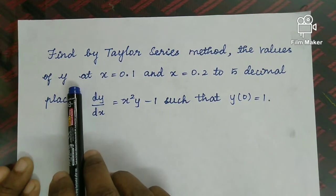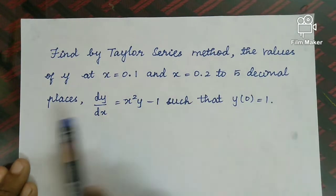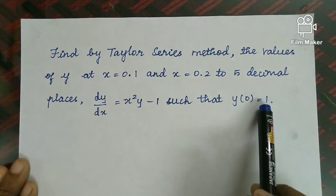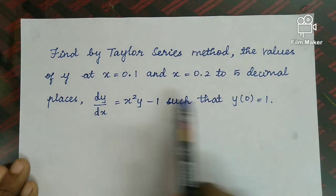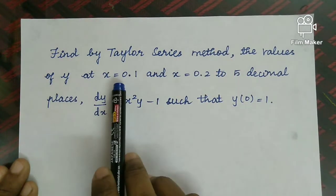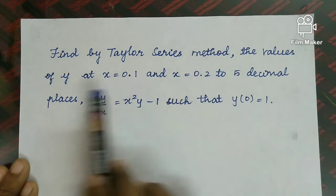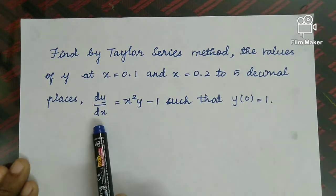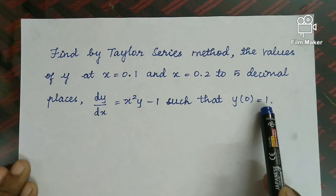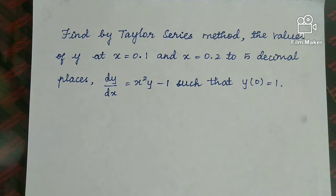The problem: Find by Taylor series method the values of y at x equal to 0.1 and x equal to 0.2 to 5 decimal places. Given: dy/dx equal to x squared y minus 1, such that y of 0 equal to 1. We identify the given data as the initial information and proceed with that.